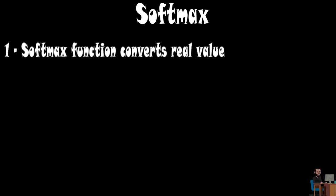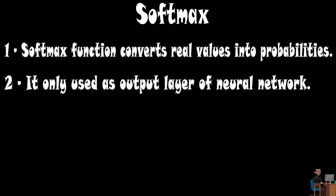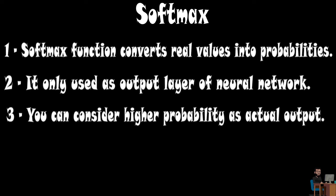Three things to remember from this video: Softmax function converts real values into probabilities. It is only used as output layer of neural network. You can consider higher probability as actual output.